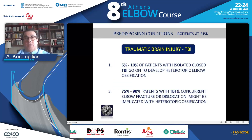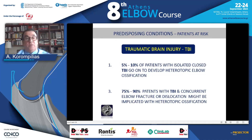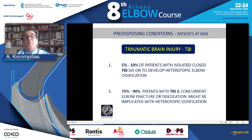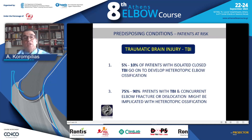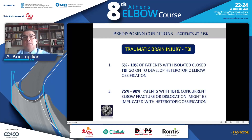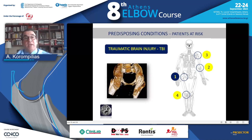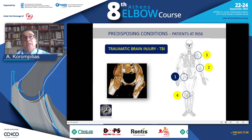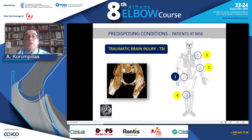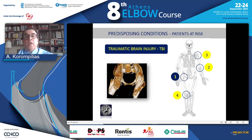As we know, traumatic brain injury is one of the predisposing factors for heterotopic ossification. Almost 5 to 10% of patients with TBI will be complicated by heterotopic elbow ossification, and this rises to almost 90% when brain injury is associated with fracture or elbow dislocation. When talking about brain injury, the elbow is the second most common site where heterotopic ossification will develop.